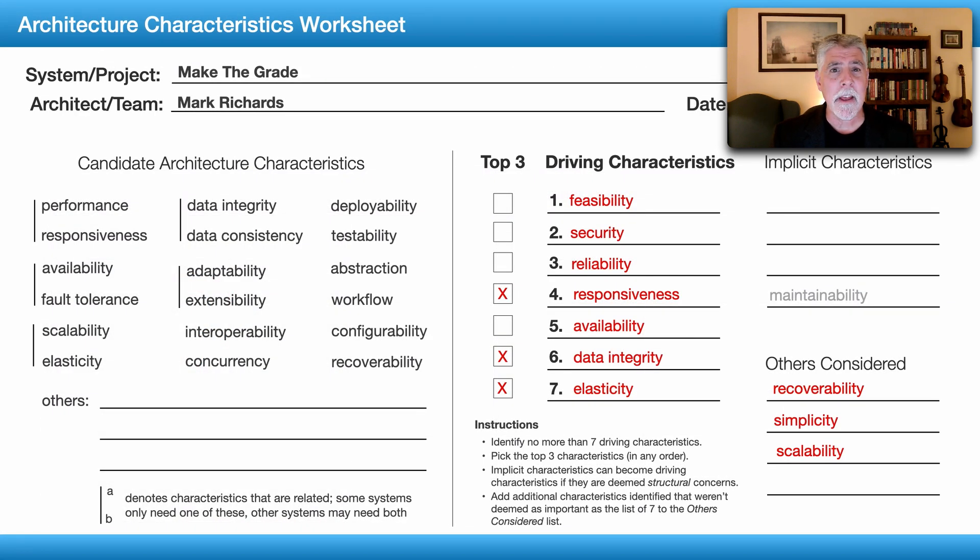Those things that are sometimes called non-functional requirements, system quality attributes. You see, these are things that the architecture itself needs to support irrespective of the functionality. That architecture in this case needs to support feasibility, security, reliability, responsiveness, availability, data integrity, and elasticity—all of these aspects. This is a great place to start in terms of saying what should I assess risk on.